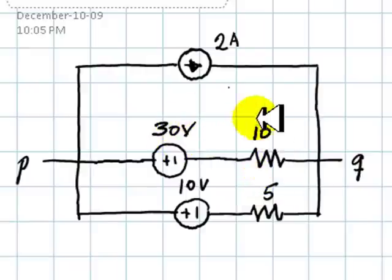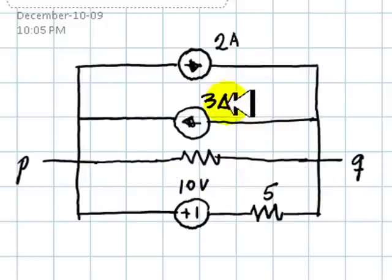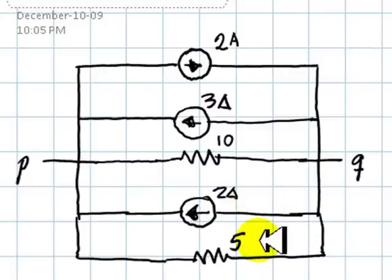30 divided by 10 is a 3 amp source in parallel with 10, like this one, and replace these two by 10 divided by 5, 2 amps in parallel with 5 ohms, a circuit like this one.